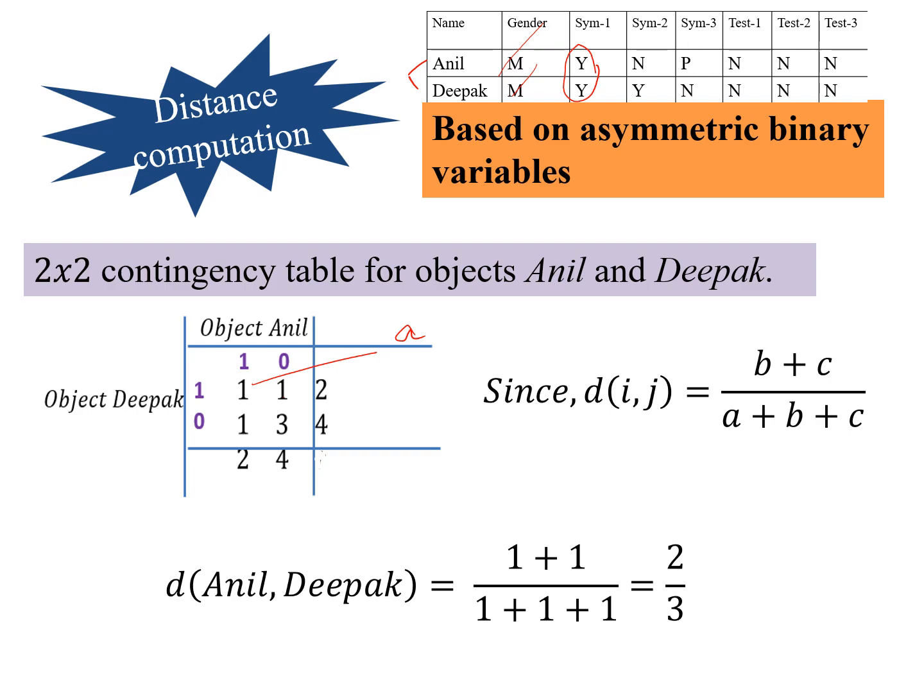This b, where object Deepak is 1 and Anil is 0. So Deepak is 1 and Anil is 0. This is again 1, and so this is our b. C is where Deepak is 0 and Anil is 1. So here again, this is c, and d is the these three matches of 0, matches of 0, and which is not important for us.